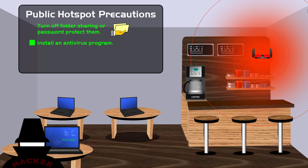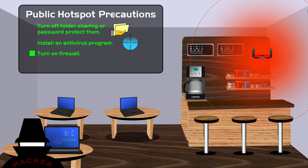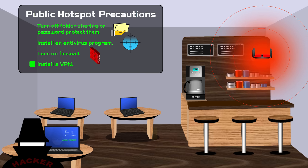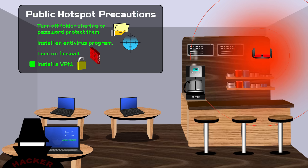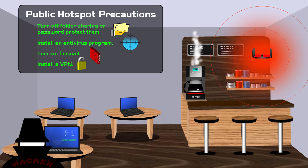Another good thing to do is to install an antivirus program. And if you have a firewall, make sure the firewall is turned on. It's also a good idea to install a VPN on your device. A VPN will prevent hackers from stealing your data because it encrypts the data being transferred from your device and the internet. So any activity you do when connected to a public hotspot, such as visiting web pages or transferring files, the data is encrypted and kept private when using a VPN.